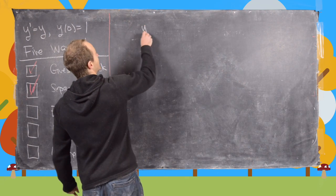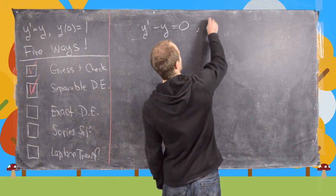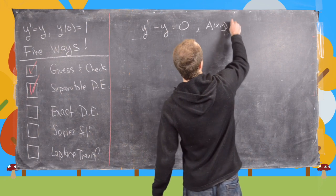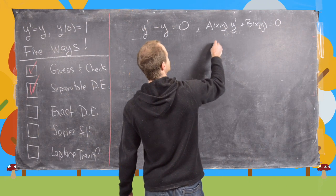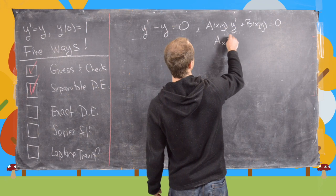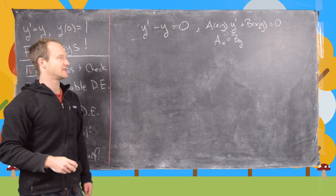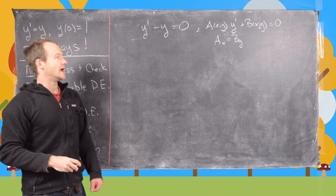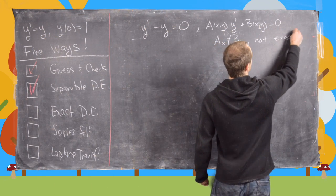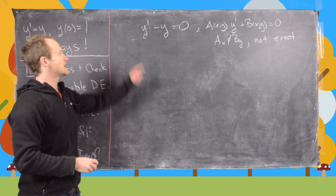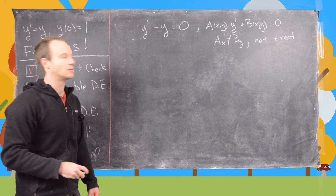Rewriting this, we have y prime minus y equals 0. Recall that exact differential equations are of the form a(x,y) y prime plus b(x,y) equals 0, and what we need is the partial of a with respect to x equal to the partial of b with respect to y. But that's not the case here, so it's not exact. The good news is we can multiply by an integrating factor to turn it into an exact equation, and that integrating factor will be 1 over y.